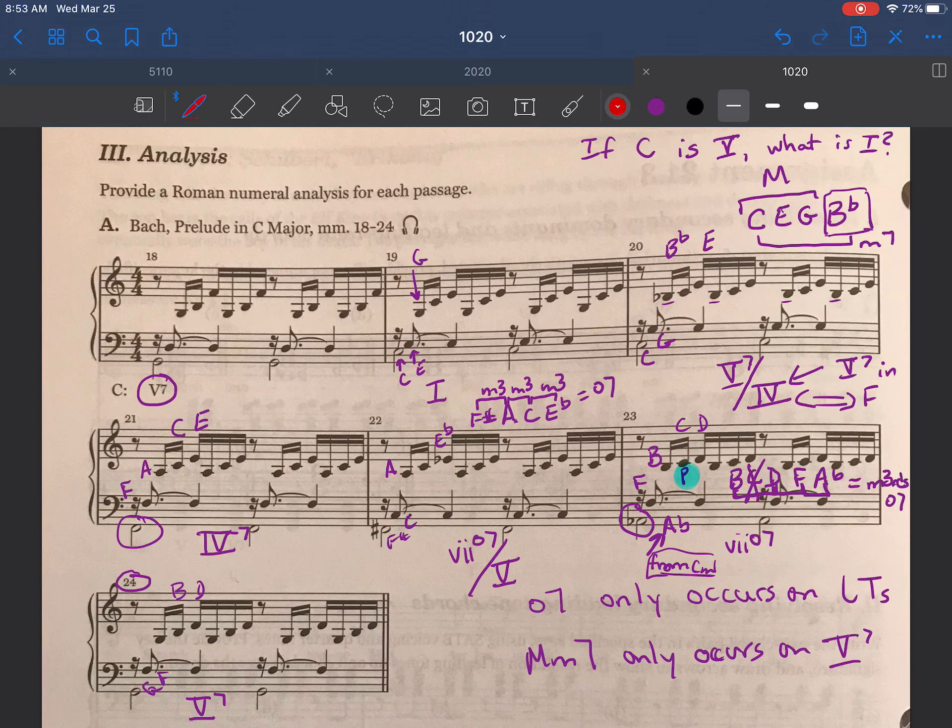And thinking about a contextual analysis here. Measure 19 is my tonic. I'm just going to start my phrase there. Measure 19 is my tonic. Measure 20, I start my predominant area. That predominant continues all the way to measure 23 where I have a leading tone chord, and that's my predominant.